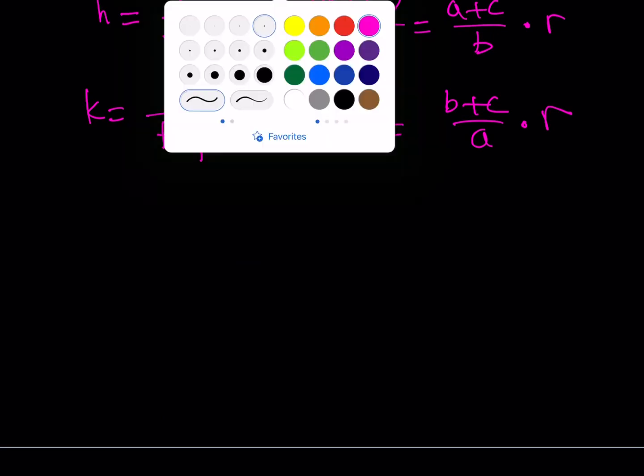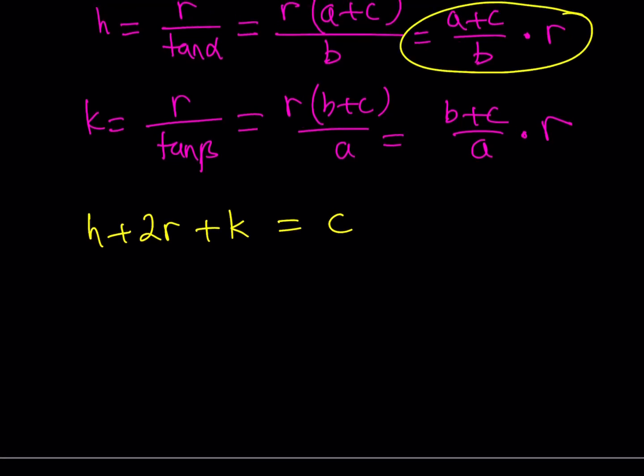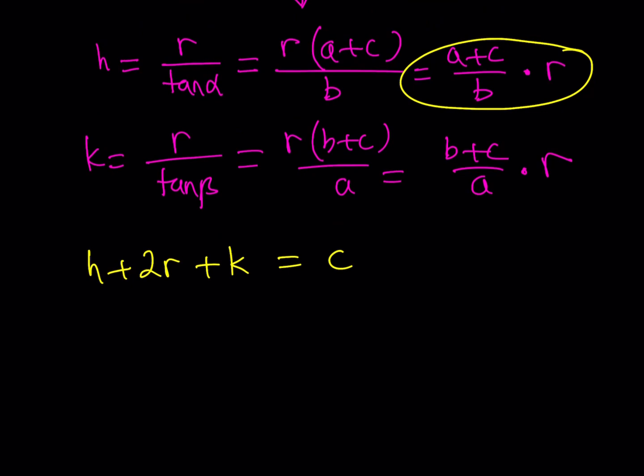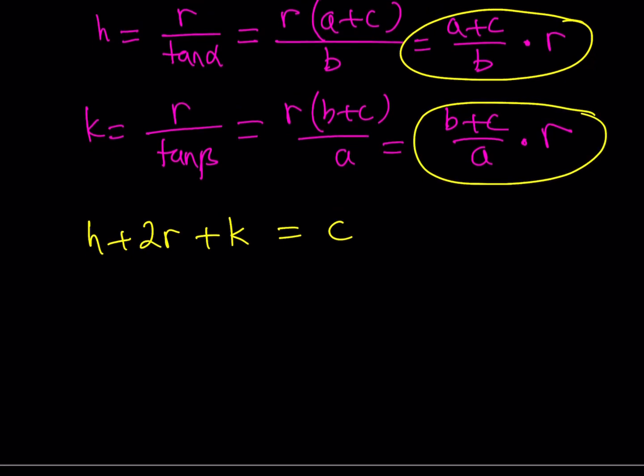So basically, we have H plus 2R plus K is equal to C. This is the critical part. Now, I can replace H with this, and I can replace K with this. Let's do it. So this is going to give me A plus C over B multiplied by R, and then I'll have 2 times R plus K, which is B plus C over A times R, and the sum is going to equal C. Awesome.